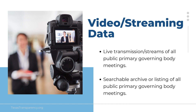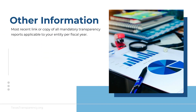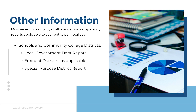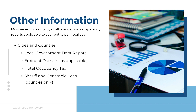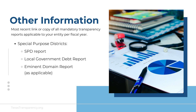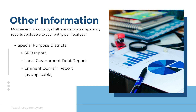Your transparency page should also include a link to or copy of all mandatory transparency reports applicable to your entity per fiscal year, all from the most recently completed reporting year. For schools or community college districts, this includes a local government debt report, applicable eminent domain, and a special purpose district report. For cities or counties, it should include a local government debt report, applicable eminent domain, a hotel occupancy tax report, and applicable economic development corporation reporting. If your entity is a county, also include sheriff and constable fees. For special purpose districts, include an SPD report and a local government debt report.